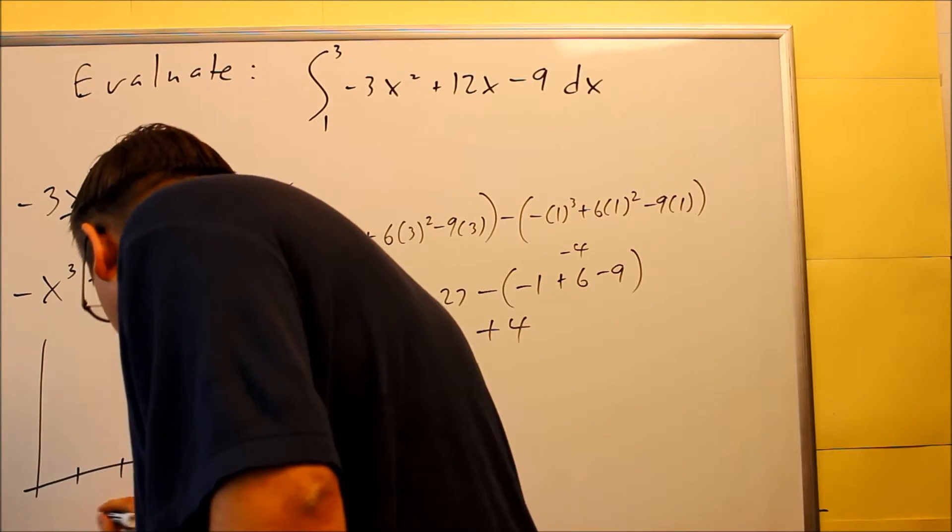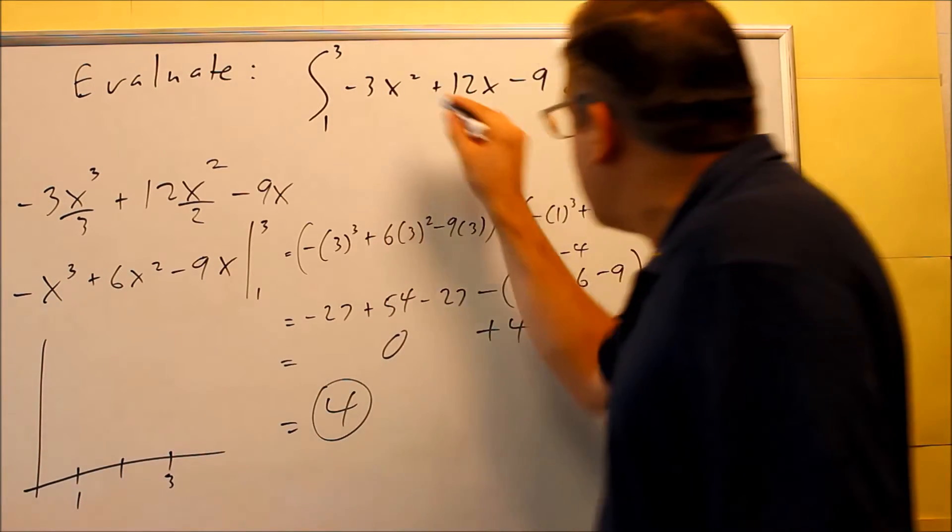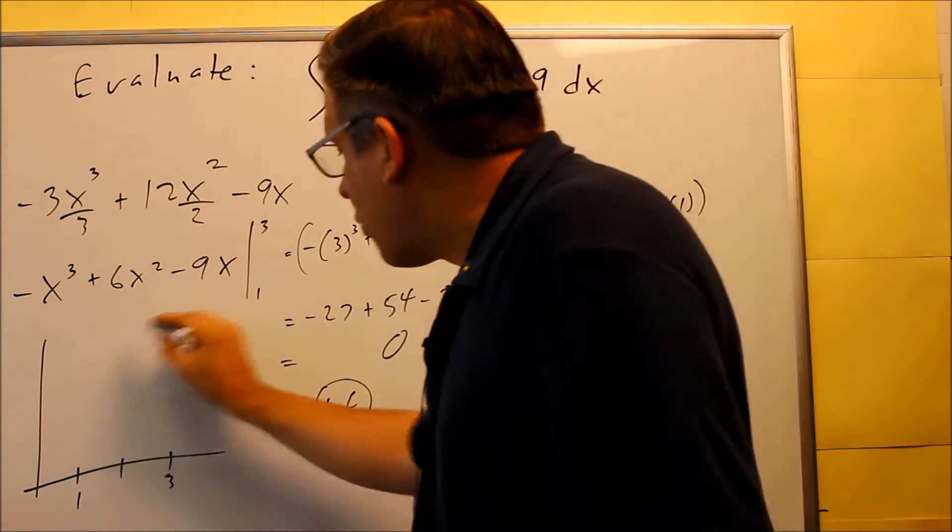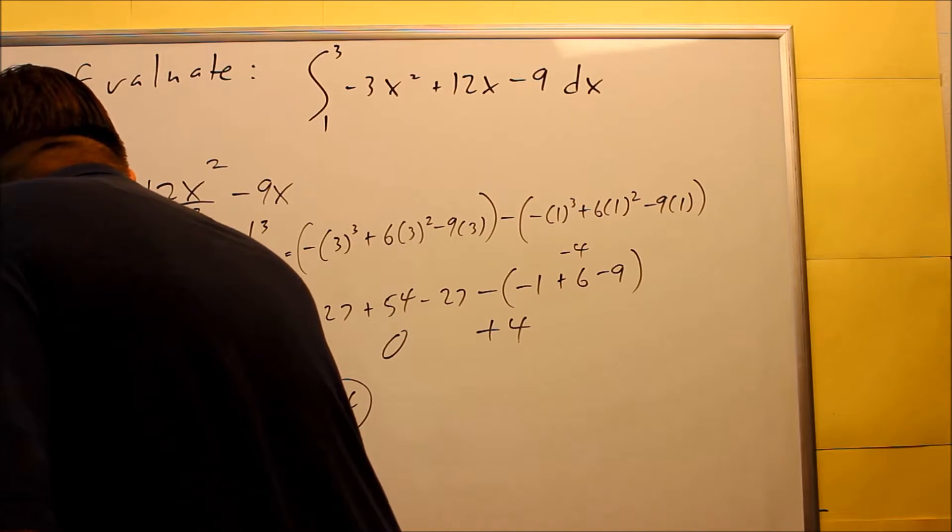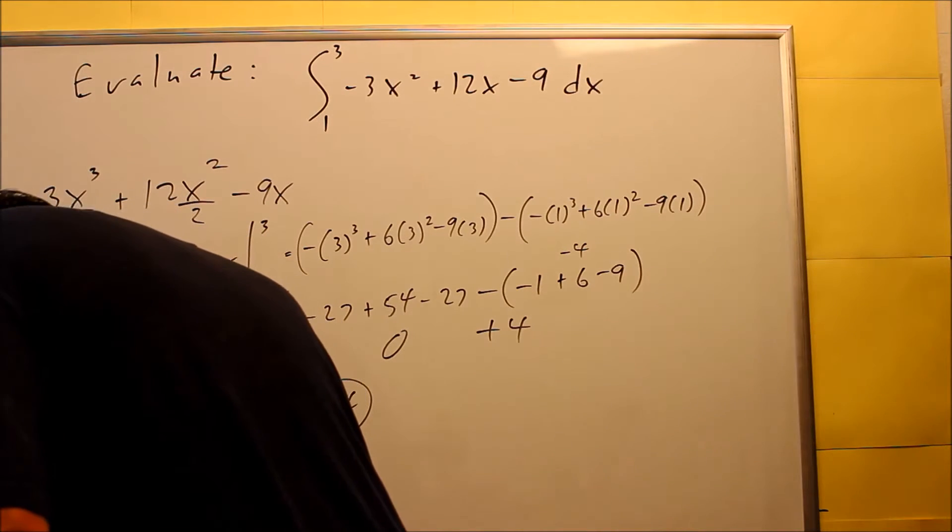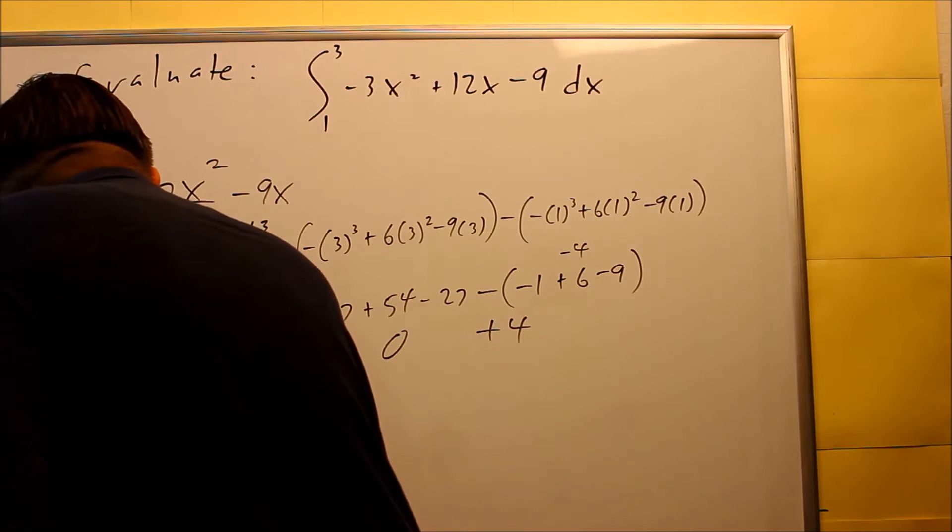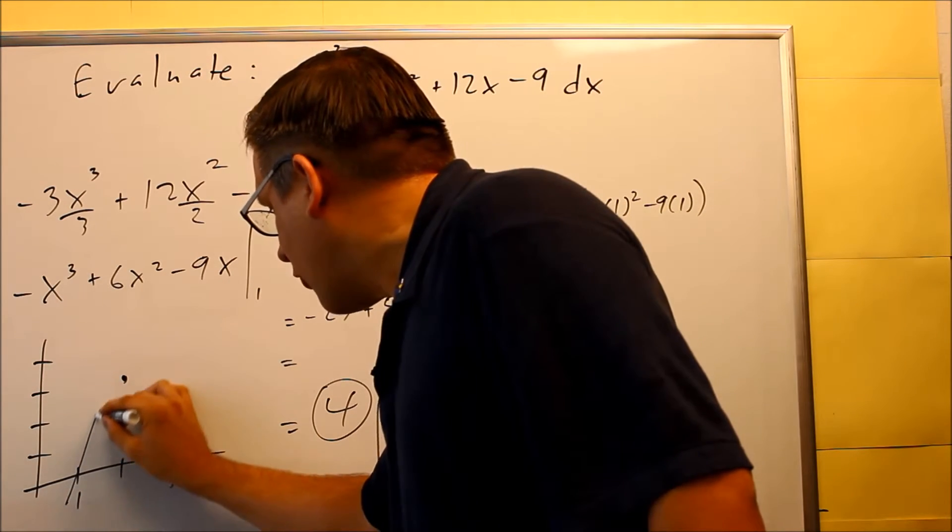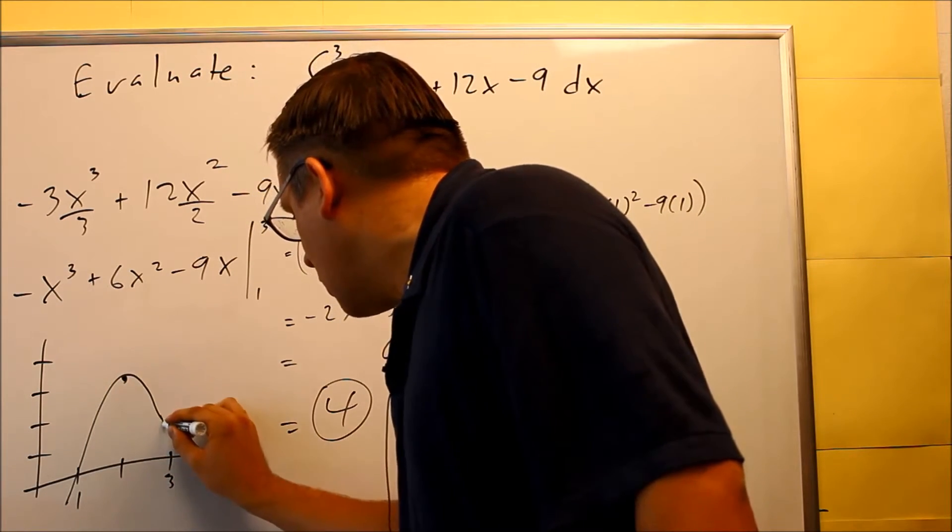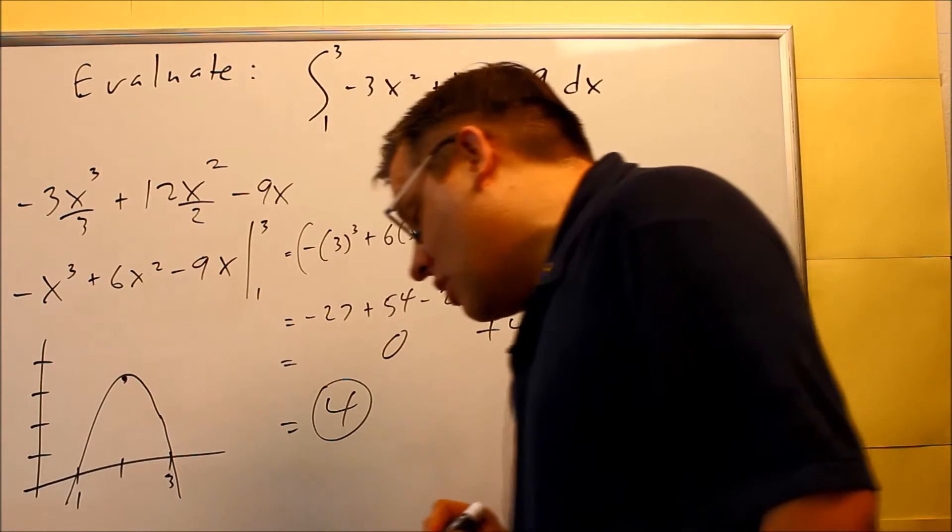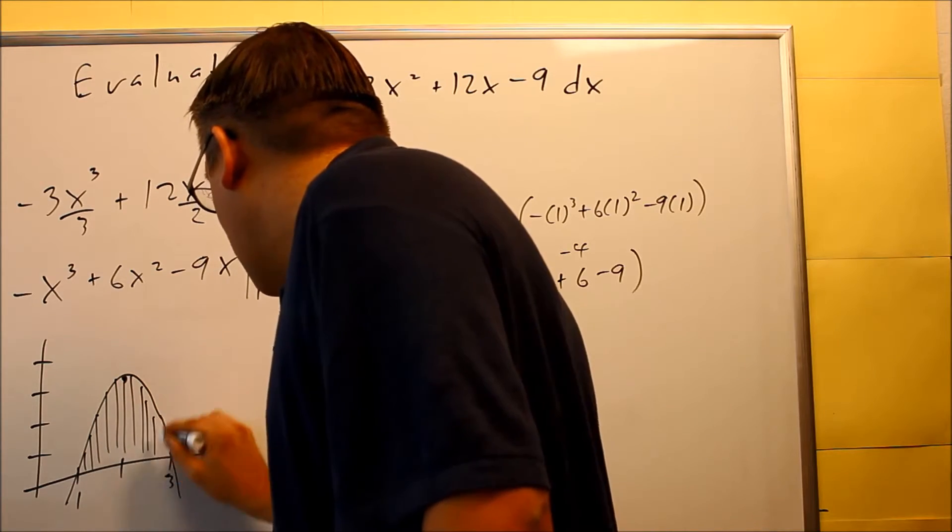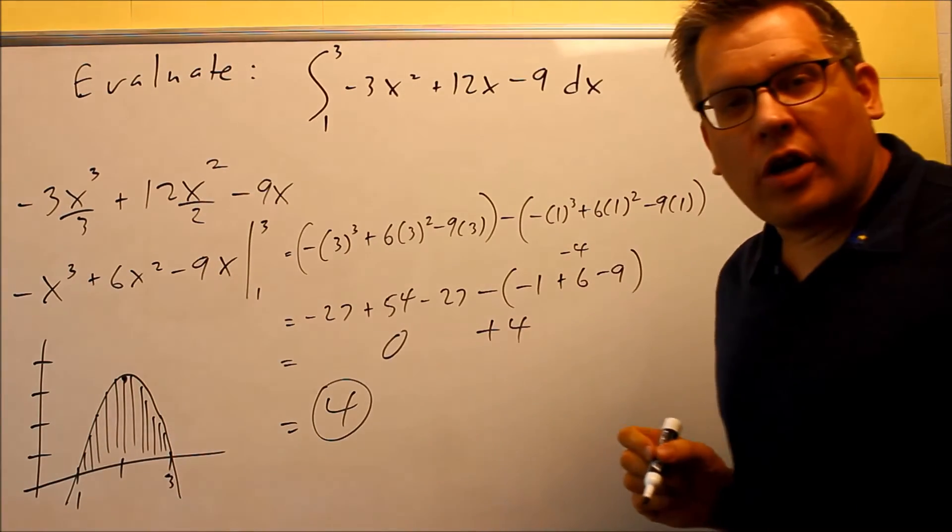it would cross the x-axis at 1 and 3 if you were to factor this, and because it's a negative, that means it's a parabola that's opening down. And so if you were to calculate the vertex there, that would happen here at 3, and so the graph itself is going to look like this. So what we're doing is we're actually finding this area right here.